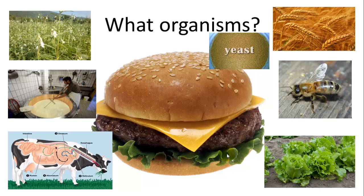In biology, we try to classify organisms and put them into different types. If you were given all the different species we talked about — the cow, lettuce, wheat, sesame seeds, maybe a bee for honey mustard — you could group them according to different things. You could group the cow, sesame seed, wheat, bee, and lettuce together because they are all multicellular, and put yeast and bacteria together because they are unicellular. In biology, we want to group things according to how they're related to each other or their common ancestor.